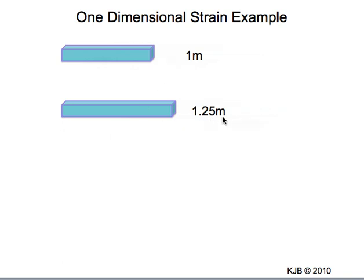We're going to look at the engineering strain and the true strain that would result from that particular deformation. I'm going to grab my pen and see if we can describe those strains. The engineering strain for this particular example would be equal to 1.25 minus 1 divided by 1.